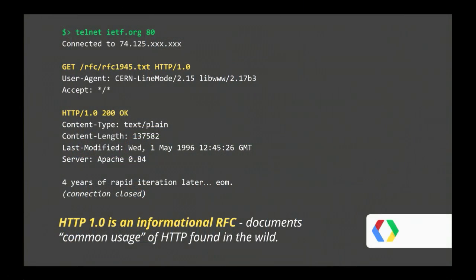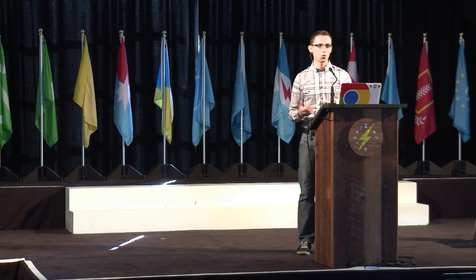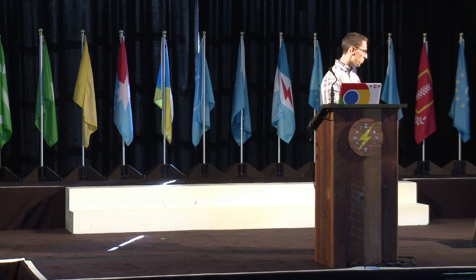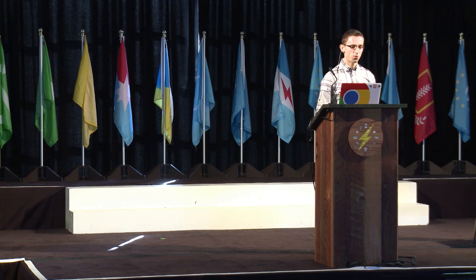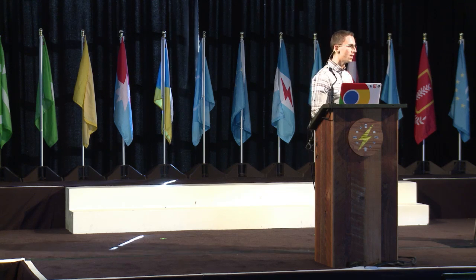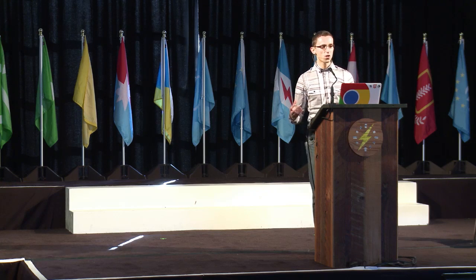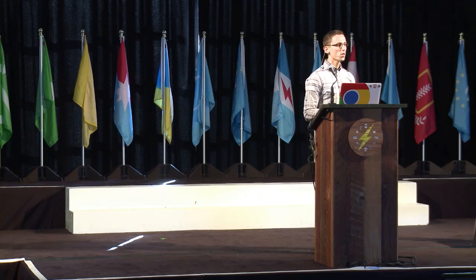A few years passed. Now we're looking at about 1997, and HTTP 1.0 comes out. What a lot of people don't realize is that HTTP 1.0 is, in fact, an informational RFC. As such, it is not a standard. It simply documents all the crazy things that people have done with HTTP 0.9 since. They basically picked up the idea of the World Wide Web and said, I'm going to build a server, and I also need to transfer some other file types, like images. So let us add headers, add a version string, and add some status codes, because sometimes I can't serve a response.